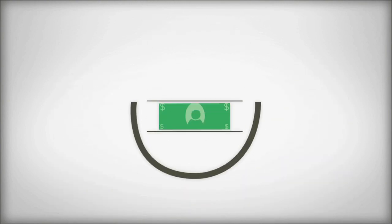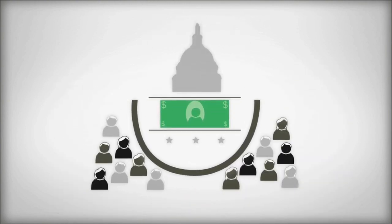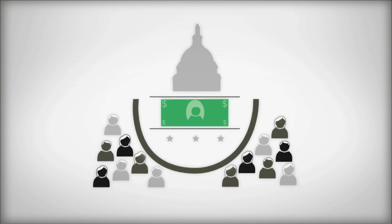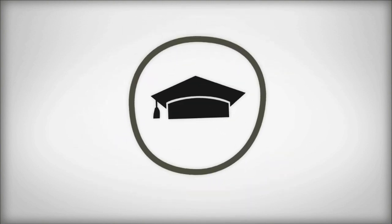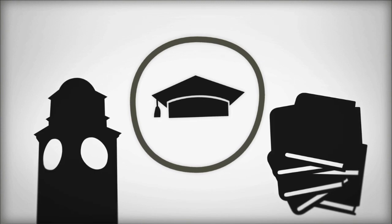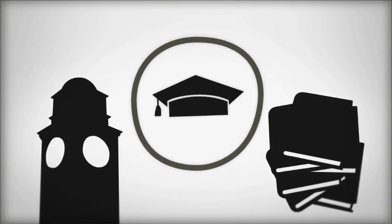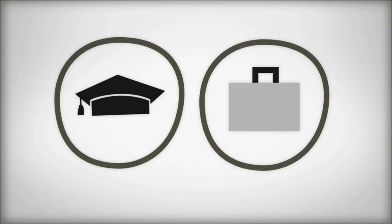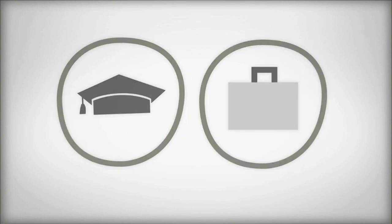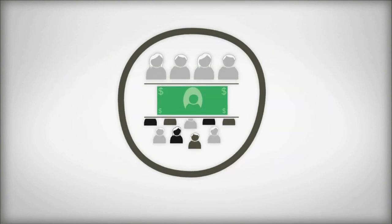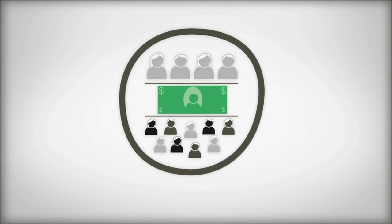Worldwide, most of the funding for the Fulbright Program comes from the U.S. government, while many foreign governments contribute substantially to the program as well. Higher education institutions, both in the U.S. and abroad, also play an important role, sharing costs and serving as centers of academic and professional development for Fulbrighters. Private organizations and individual donors provide additional funding and in-kind support.